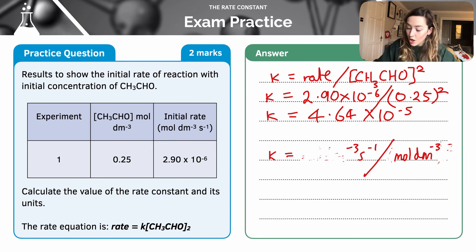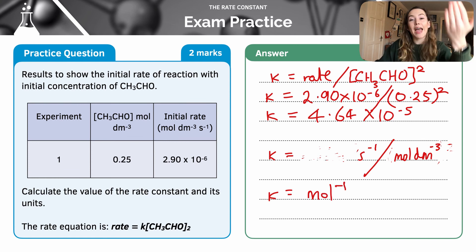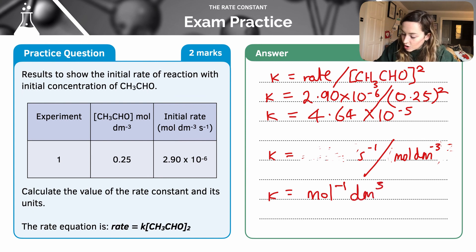So what that's leaving me with is moles to the minus 1, because it's currently a denominator. I need to bring it up to the top, so I'm going to reverse that sign. And decimetre to the 3, because again it's a denominator, I don't want to bring it up, so I'm going to reverse the sign. But s to the minus 1 is already a numerator, so I'm going to keep it as s to the minus 1. So those are my units, so I've calculated my value and my units.